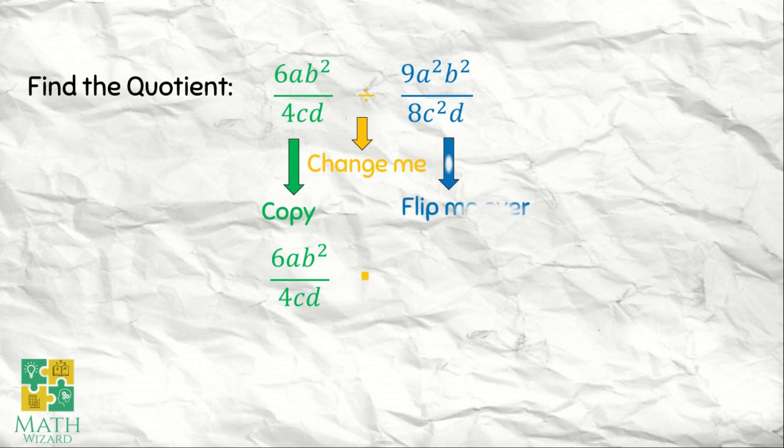Next is, we need to flip the second fraction over. So by flipping 9a squared b squared over 8c squared d squared, it becomes 8c squared d squared over 9a squared b squared.